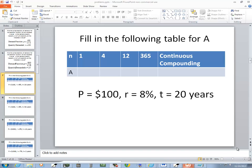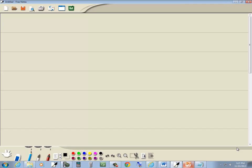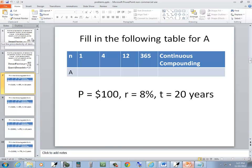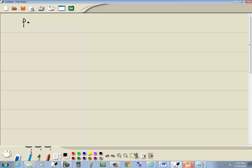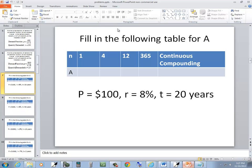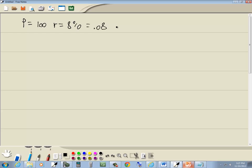Let's take a look at this problem. Given P is equal to 100, R is equal to 8%, or 0.08 if I put it in decimal form, it says T is 20 years.